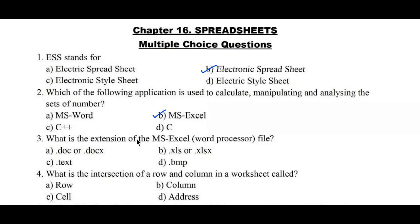Question number 3: What is the extension of the MS Excel file? Option A: .doc or .docx, B: .xls or .xlsx, C: .text, D: .bmp. Option B, .xls or .xlsx, is the right answer.